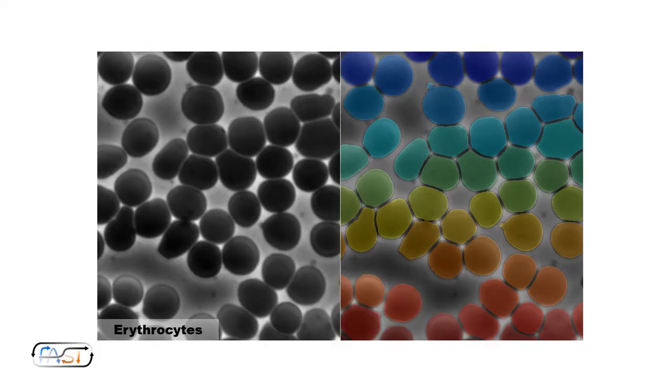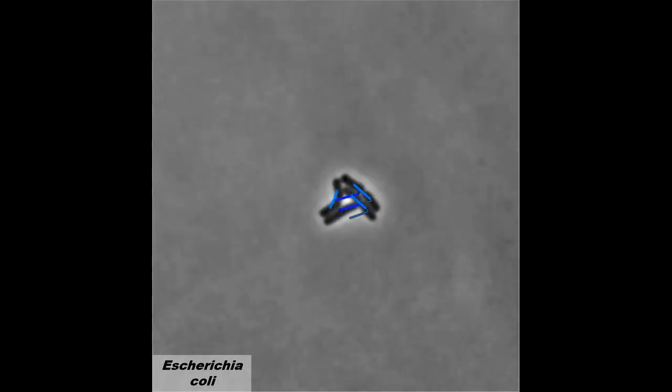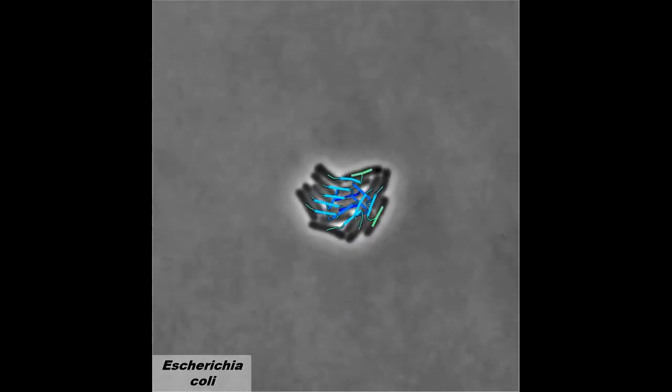FAST combines this tracking algorithm with a robust segmentation approach, capable of distinguishing tightly packed and irregularly shaped objects in a variety of contexts, as well as a lineage assignment process that uses a closely related machine learning method to robustly assign the results of cell division events.